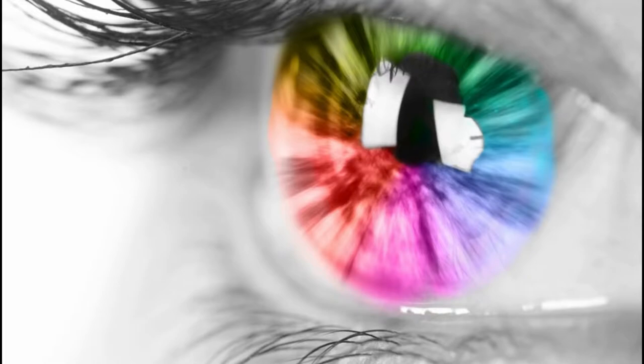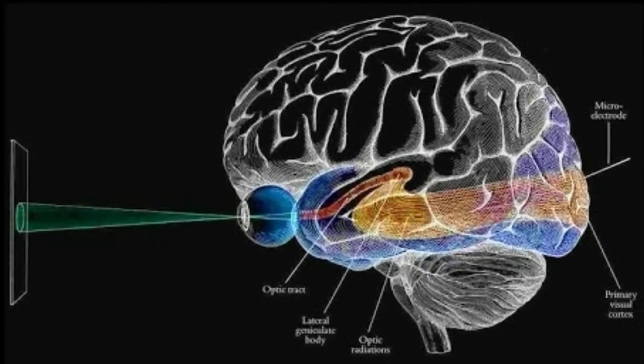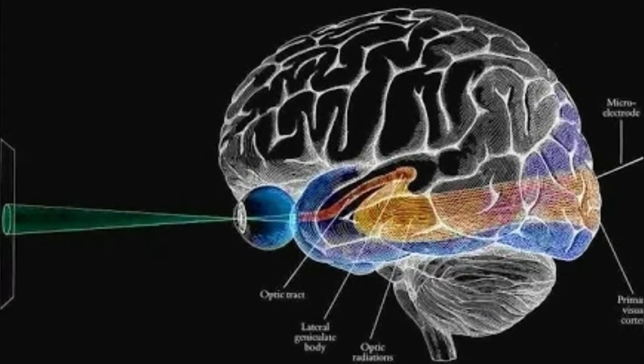Now back to color. Would you believe that all of these hearts are the exact same color? Well, they are. It's the lines and the contrast that tricks our eyes into seeing the hearts as different colors. As you can see, the lines themselves are different colors, which creates a contrast to trick our eye and mind into believing they are different colors. Our amazing brains, more than anything else, sense contrast.